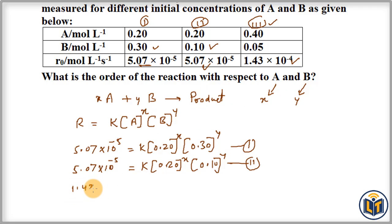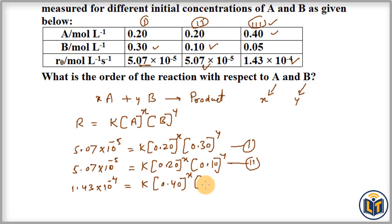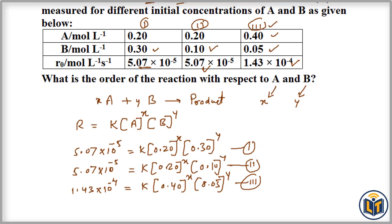Moving on to the third experimental data: the rate of reaction is 1.43 × 10⁻⁴, which is equal to K times [A] = 0.40 raised to power X, times [B] = 0.05 raised to power Y. This is the third equation. Using these three equations we can find out the values of X and Y.